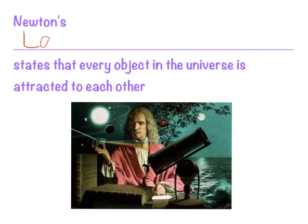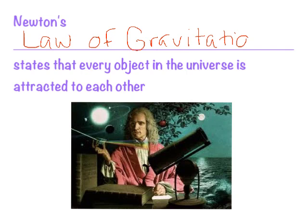Newton's law of gravitation states that every object in the universe is attracted to each other, which means we're attracted to the Earth, the Earth is attracted to the Moon, and so on and so forth.